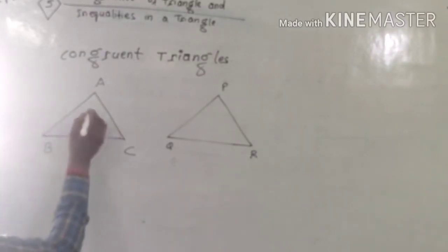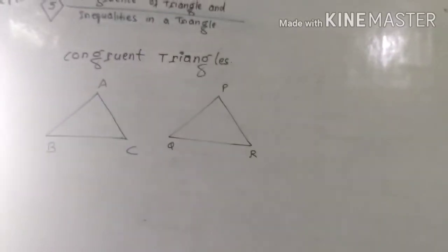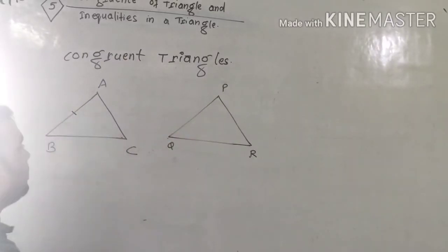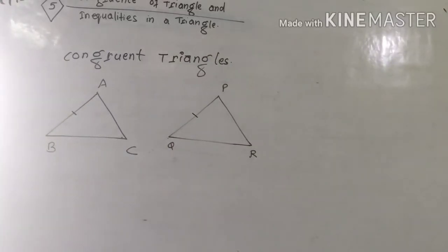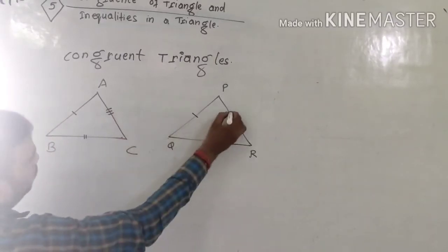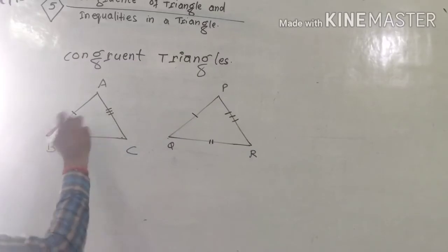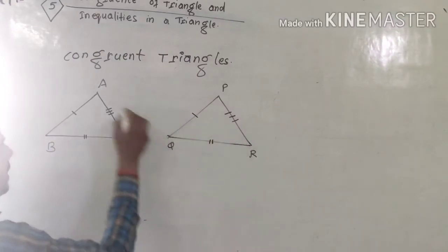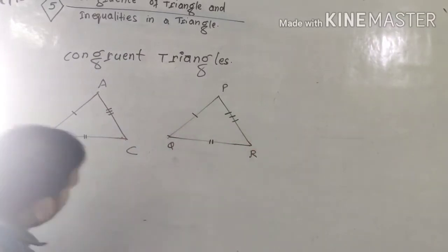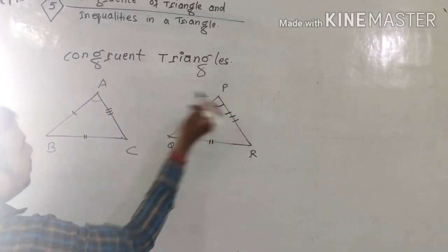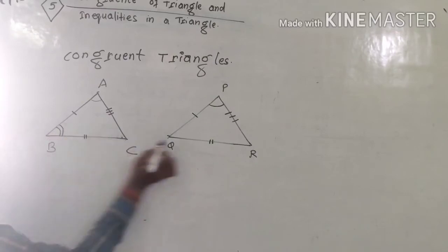That means the corresponding side of AB in triangle PQR is PQ, so AB equals PQ. BC corresponds to QR, and AC corresponds to PR. Angle A is the corresponding angle of P, and angle B is the corresponding angle of Q.